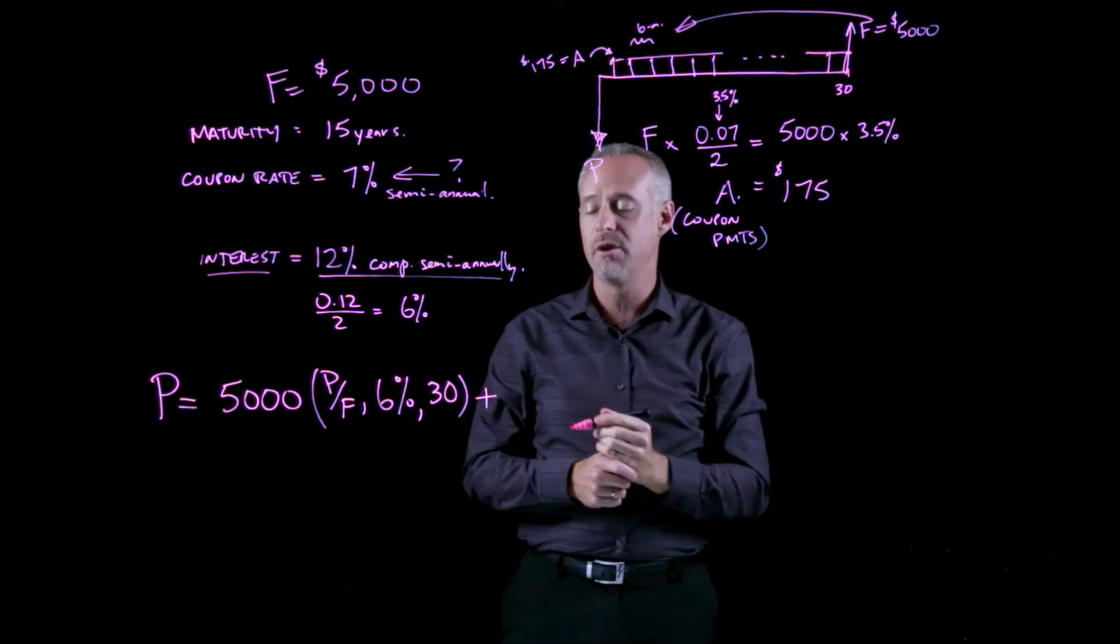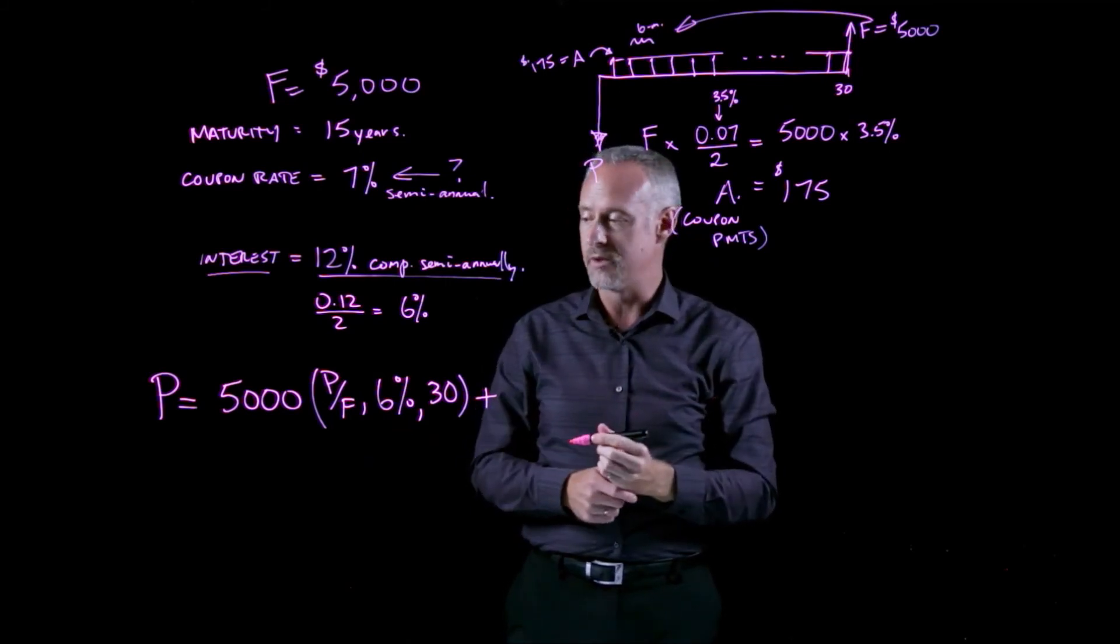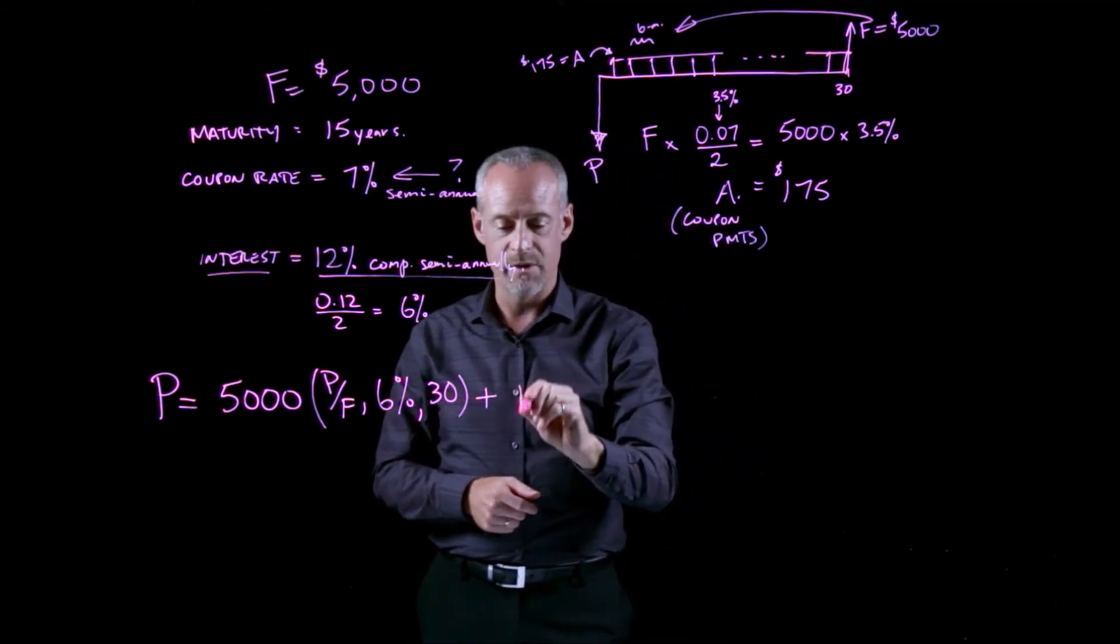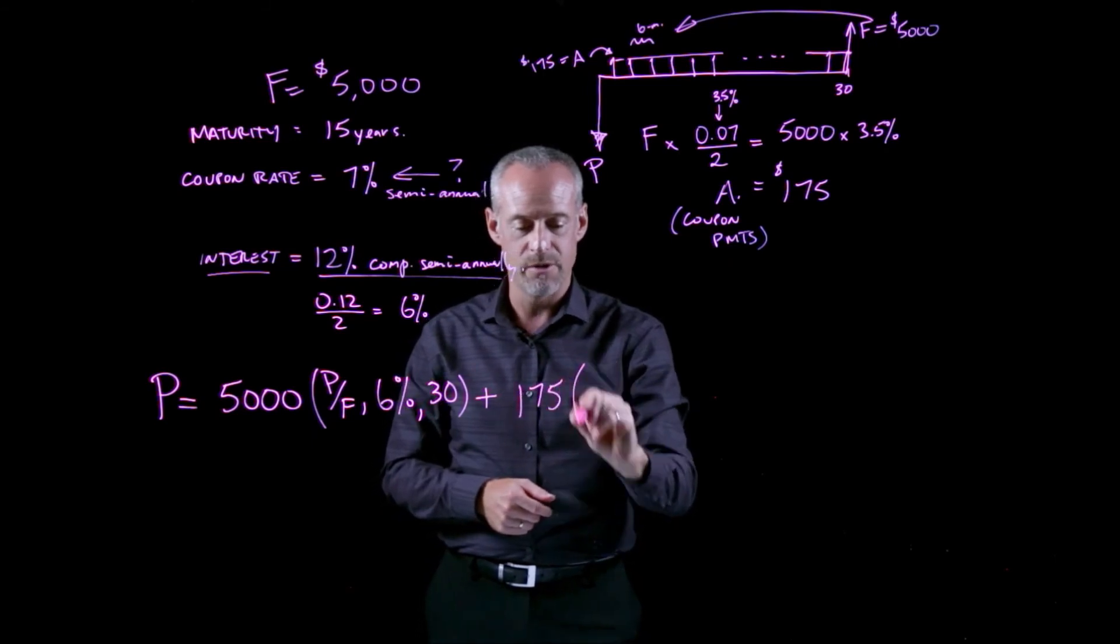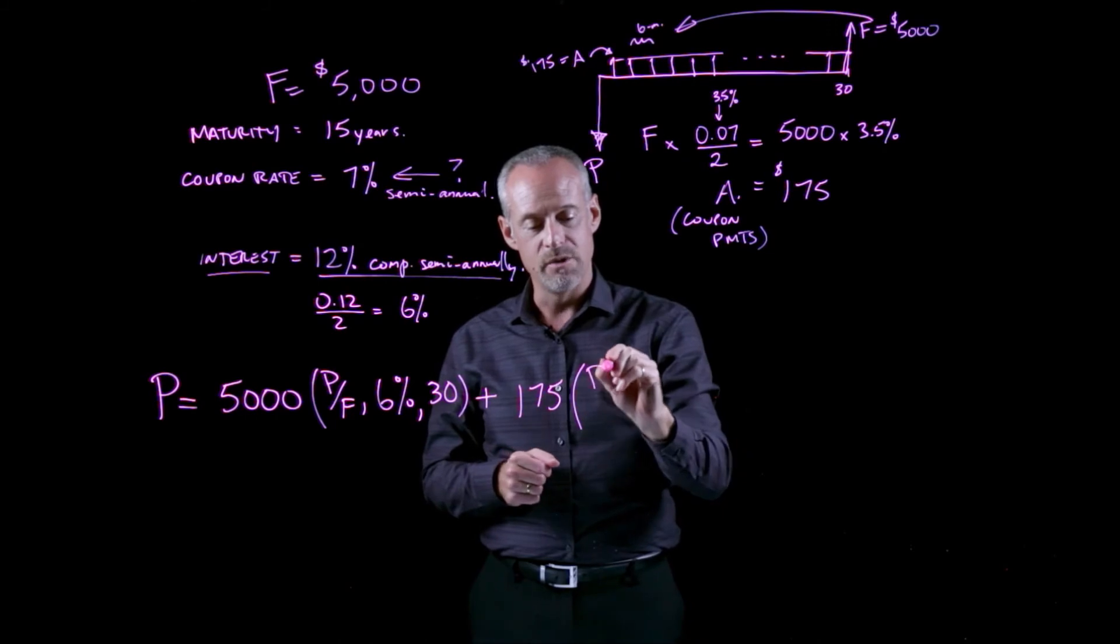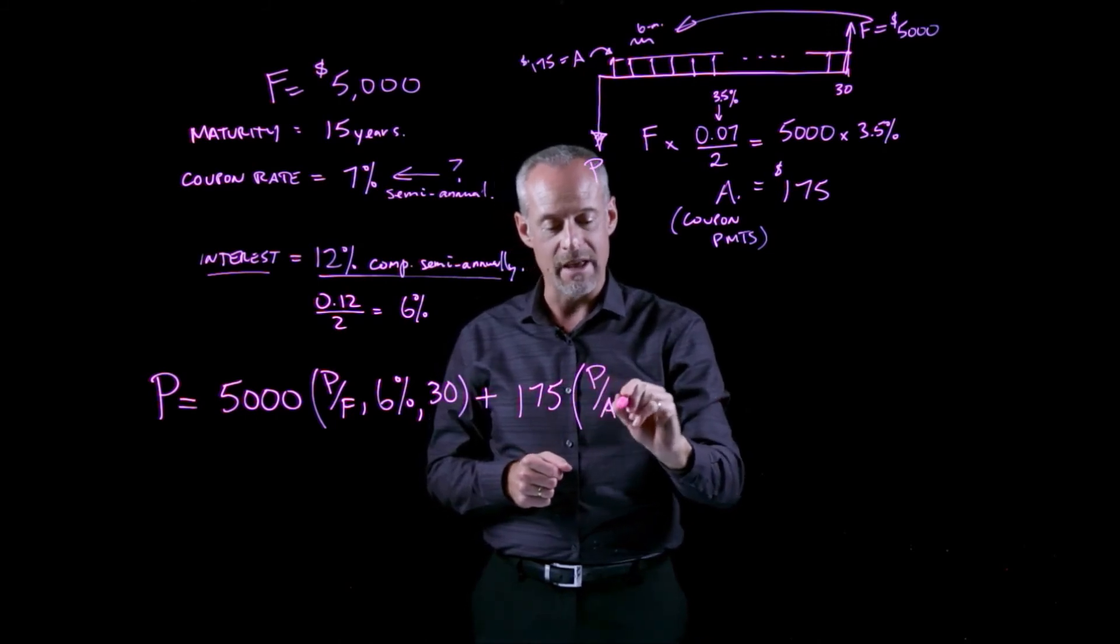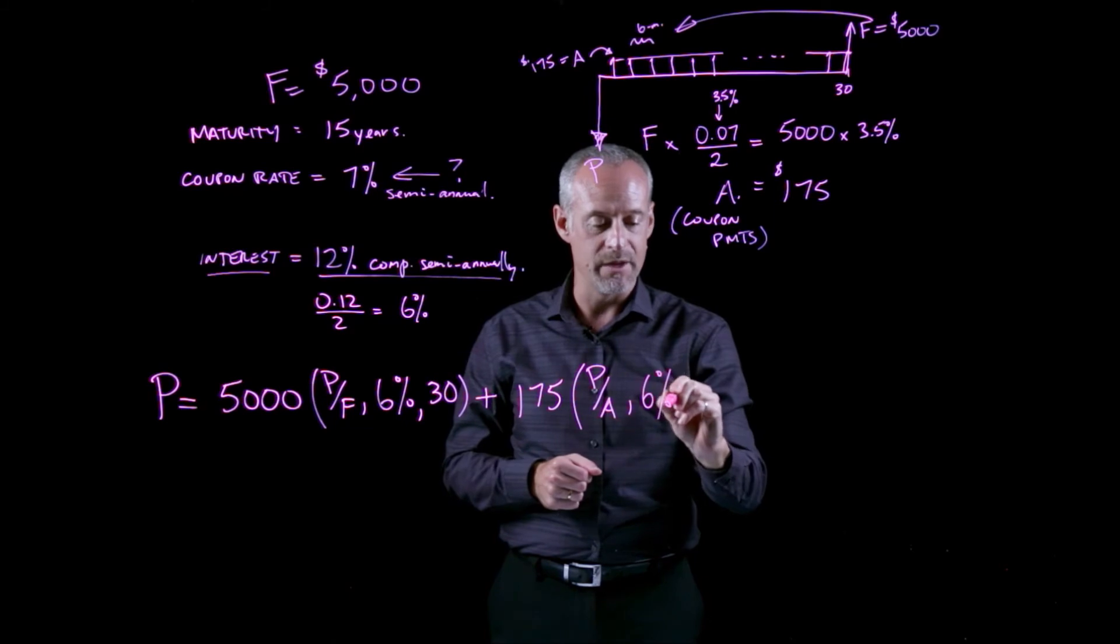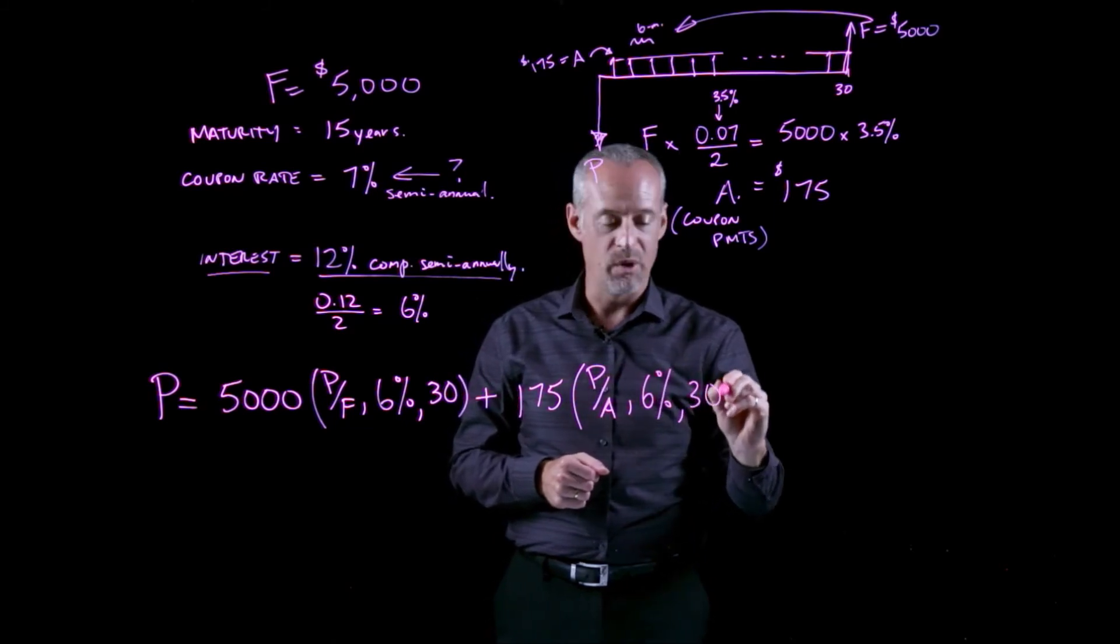The second part is the value of the annuity or these coupon payments. I know the amount of the payments are $175. To calculate the present value of an annuity, I can use the P given A compound interest factor for 6% and 30 periods.